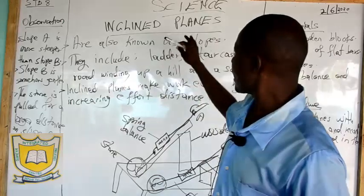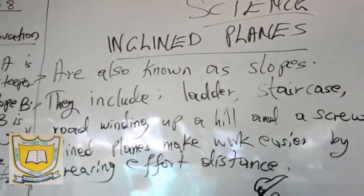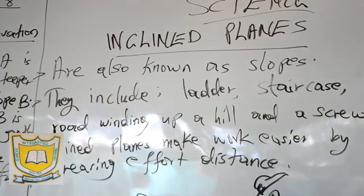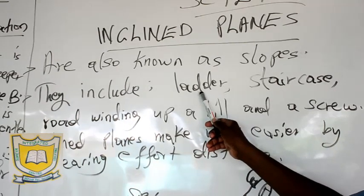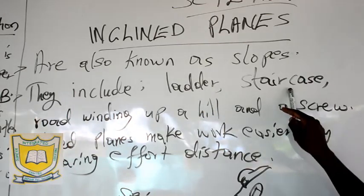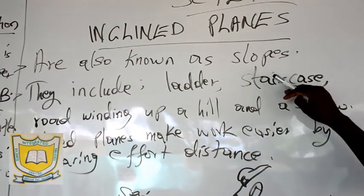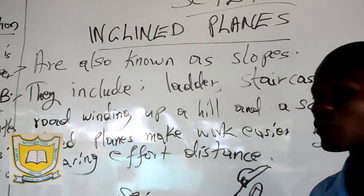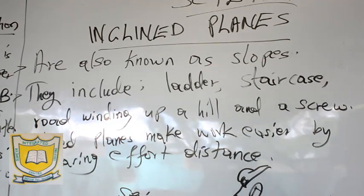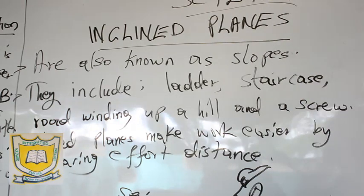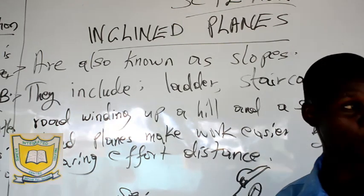So to start with, what are inclined planes? As I have discussed, these are a type of machine which is also known as slopes. The inclined plane includes the following: the first example is a ladder, used to access higher points. We have the staircase, the escalator, and also the ramp. Then we have the road winding up a hill. And lastly, we have the screw. Those are the four types of inclined plane.